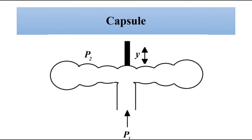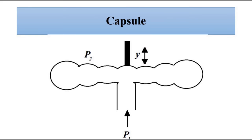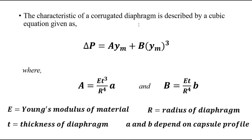If two identical corrugated diaphragms are joined together, we get a capsule — an enclosed structure. Pressure P1 is applied through a channel and the pressure on the other side is P2. Depending on the difference between P1 and P2, the diaphragm undergoes compression or expansion, resulting in a displacement Y.